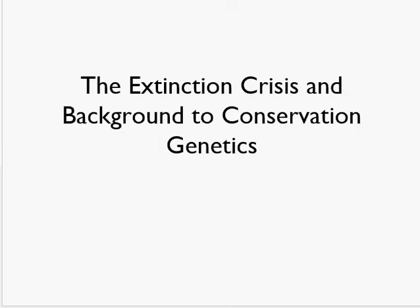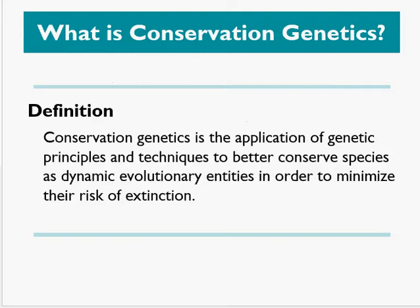This first lecture is really just to pull everybody together and remind them what genetics is, some of the different terms in genetics, and basically trying to get you to understand why they are important in conservation. So what is conservation genetics? Conservation genetics is the application of genetic principles and techniques to better conserve species as a dynamic evolutionary entity in order to minimize their risk of extinction. Genetics is quite often at the heart of the reason why some species begin to go extinct, so we really do need to understand genetics to understand why species are at risk of extinction.